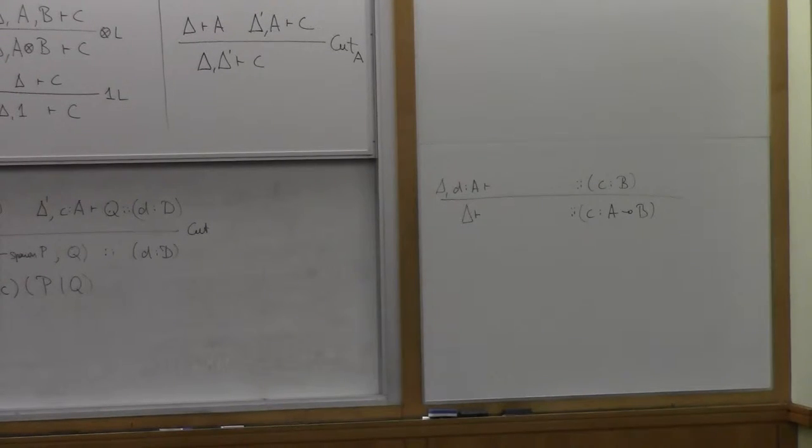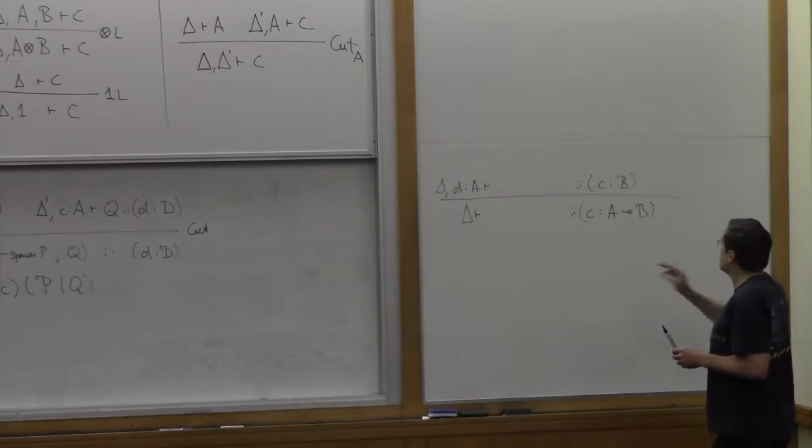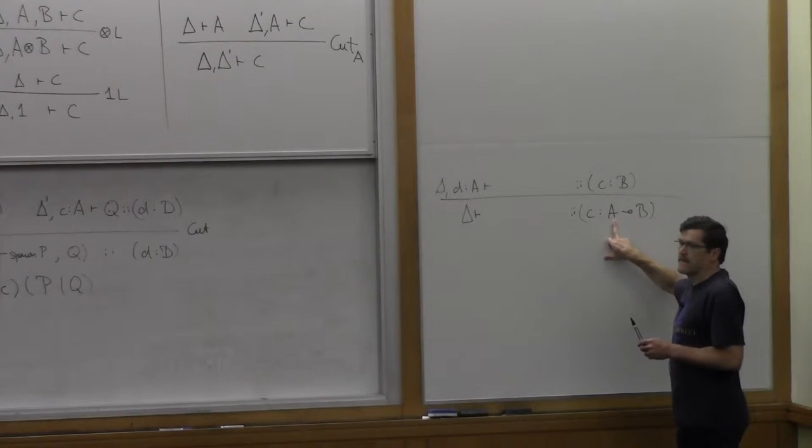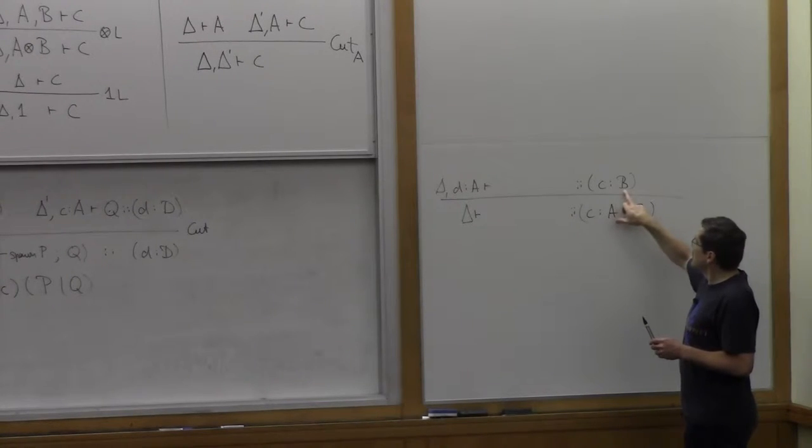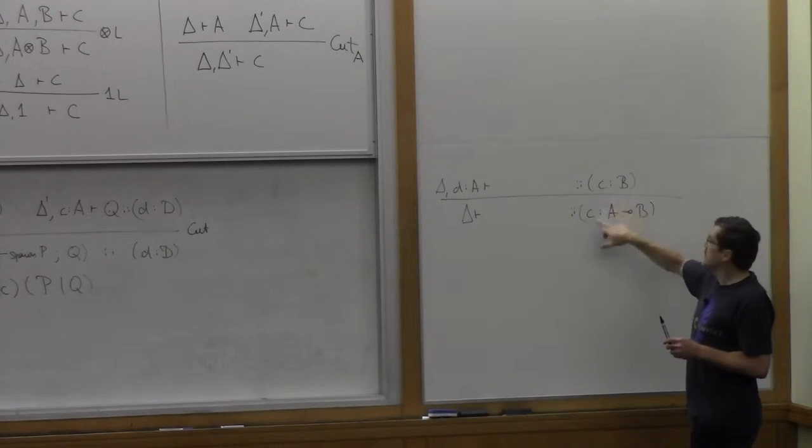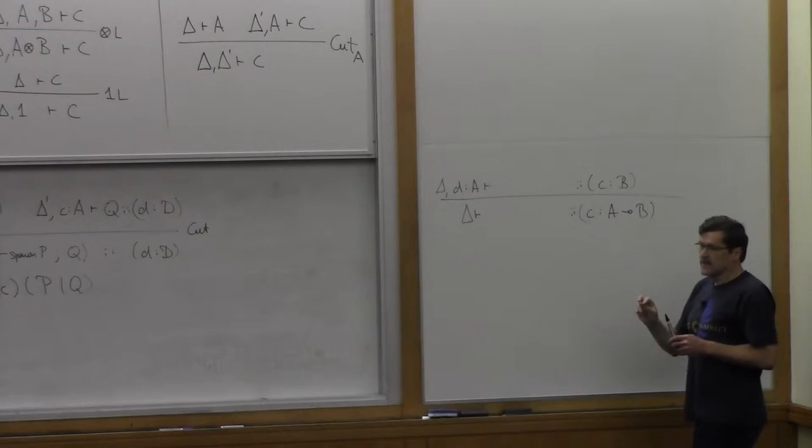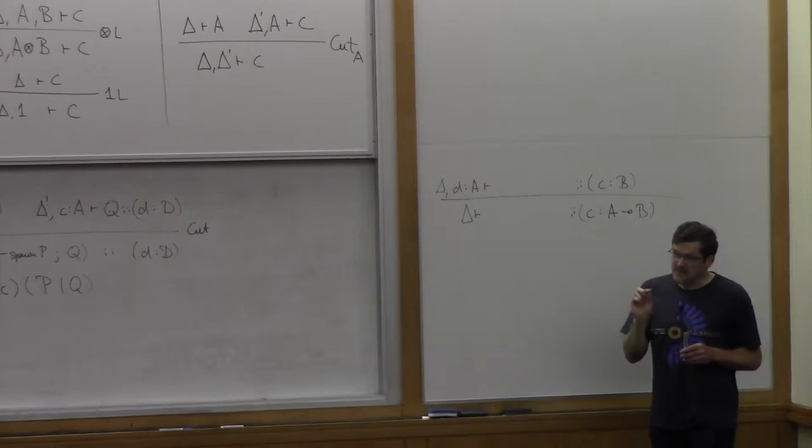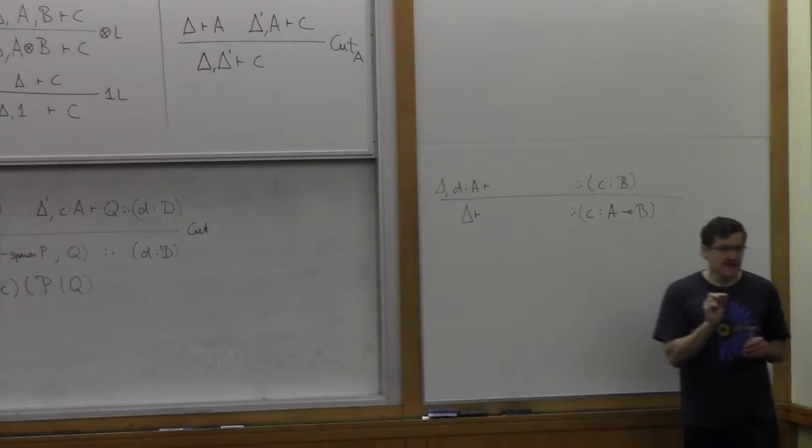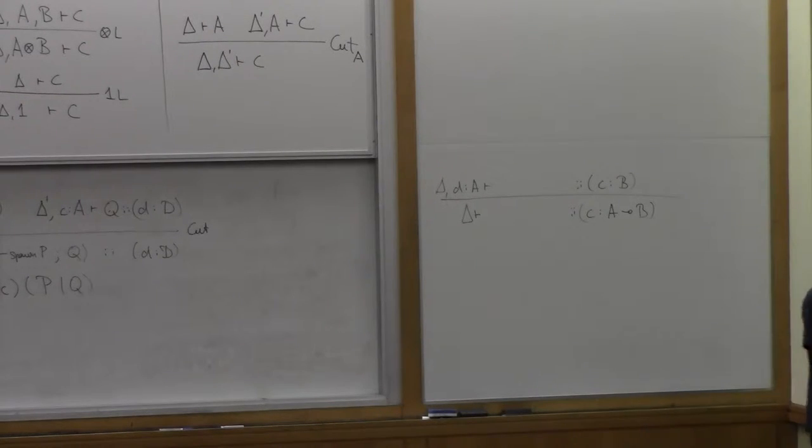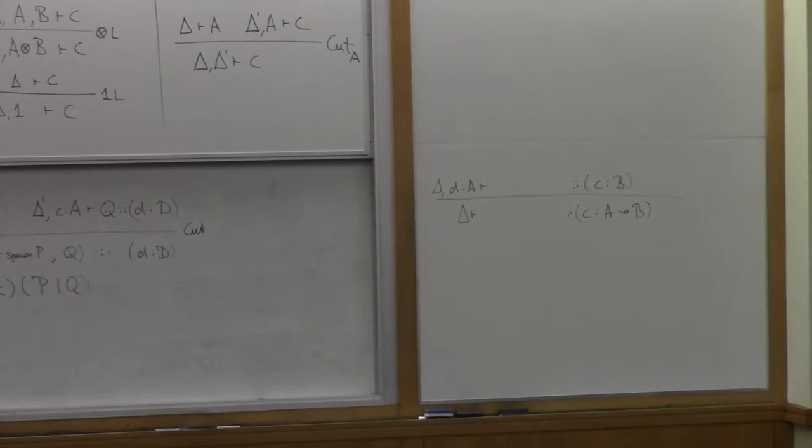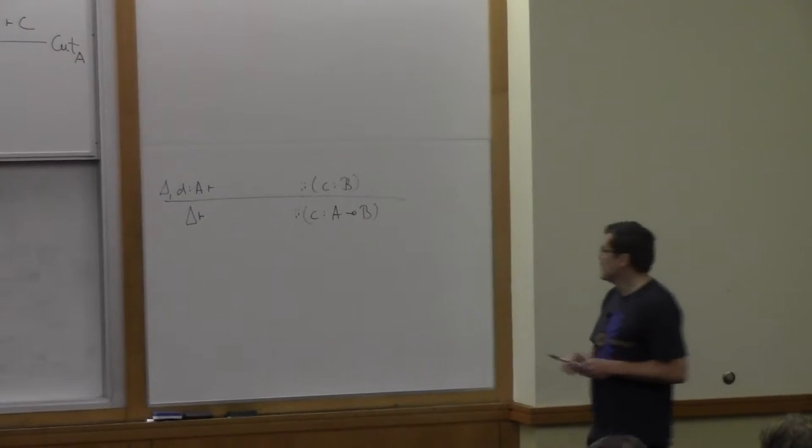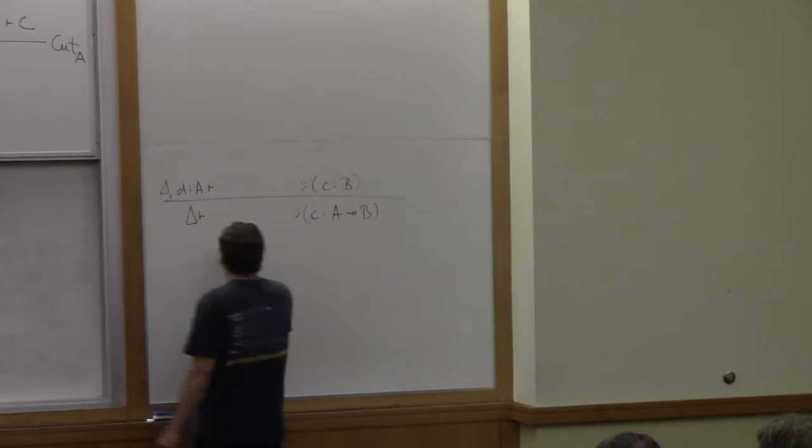So you input a process that produces A and then you continue by providing B along the same channel. The only difference to what you said is we don't actually pass processes around. What you pass around is channels. So handles to interact with processes but not the process itself.